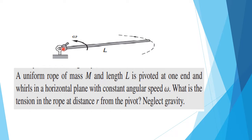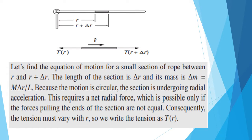From the pivot point, at some distance r, we need to find the tension in the rope. We take a small section at a distance r and r plus delta r, so delta r is the length of this small section. We find the equation of motion for this small section between r and r plus delta r. The length of the section is delta r, and its mass is m·delta r by l, since m by l is the mass per unit length.